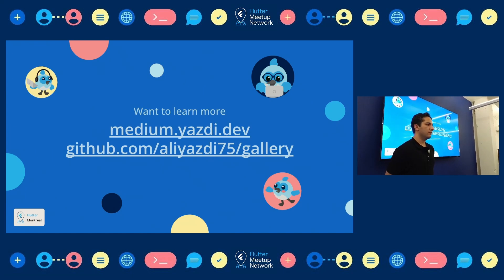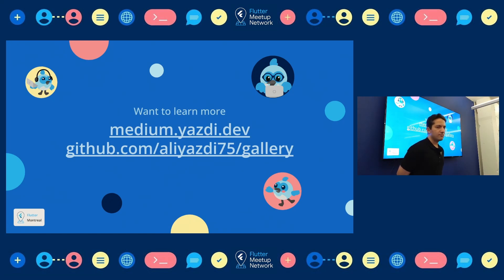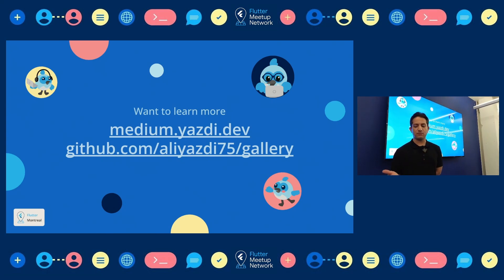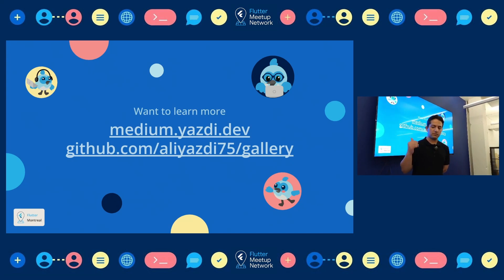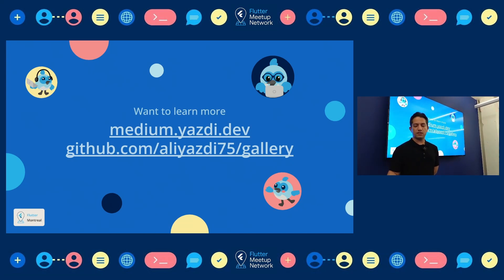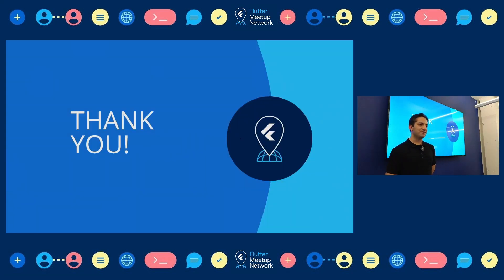These are all the references — I have a Medium article at medium.yazi.dev with all the explanations, and you can also find the source code for the gallery example there. The other example (the app we walked through) is not public because it's for another project, but the gallery is public. You can check it there. Thank you so much.